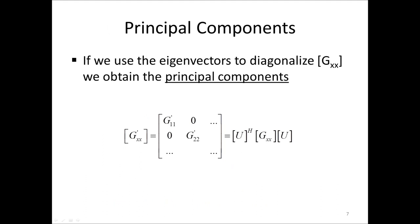We now define the concept of principal components. Assuming we have an input cross-spectrum matrix GXX, we diagonalize it to form a new matrix G'XX equal to G'11, G'22, etc. on the diagonal and zeros on the off-diagonal. This is done by the eigenvector matrix U via the multiplication U Hermitian transpose times GXX times U — an eigenvalue decomposition performed for each frequency.